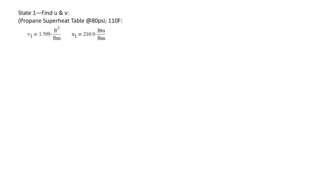Okay, let's find some properties for state one. I want to know the internal energy and the specific volume. I know that state one is superheated, so I'm going to go to the propane superheat table at 80 PSI and 110 degrees Fahrenheit, where I'm going to find these properties for state one. The specific volume is 1.599 cubic feet per pound mass. And the specific internal energy is 210.9 BTUs per pound mass.